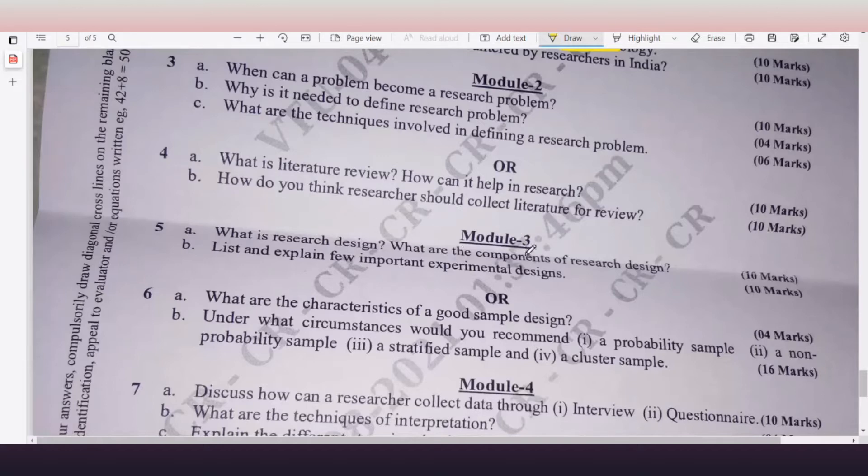Then Module 3. 5a: What is research design? What are the components of research design? 10 marks. 5b: List and explain a few important experimental designs, 10 marks. 6a: What are the characteristics of a good sample design? 4 marks. And this question, straight away you can get around 16 marks they are asking. Probably you can get around 10-12 marks if you write properly.